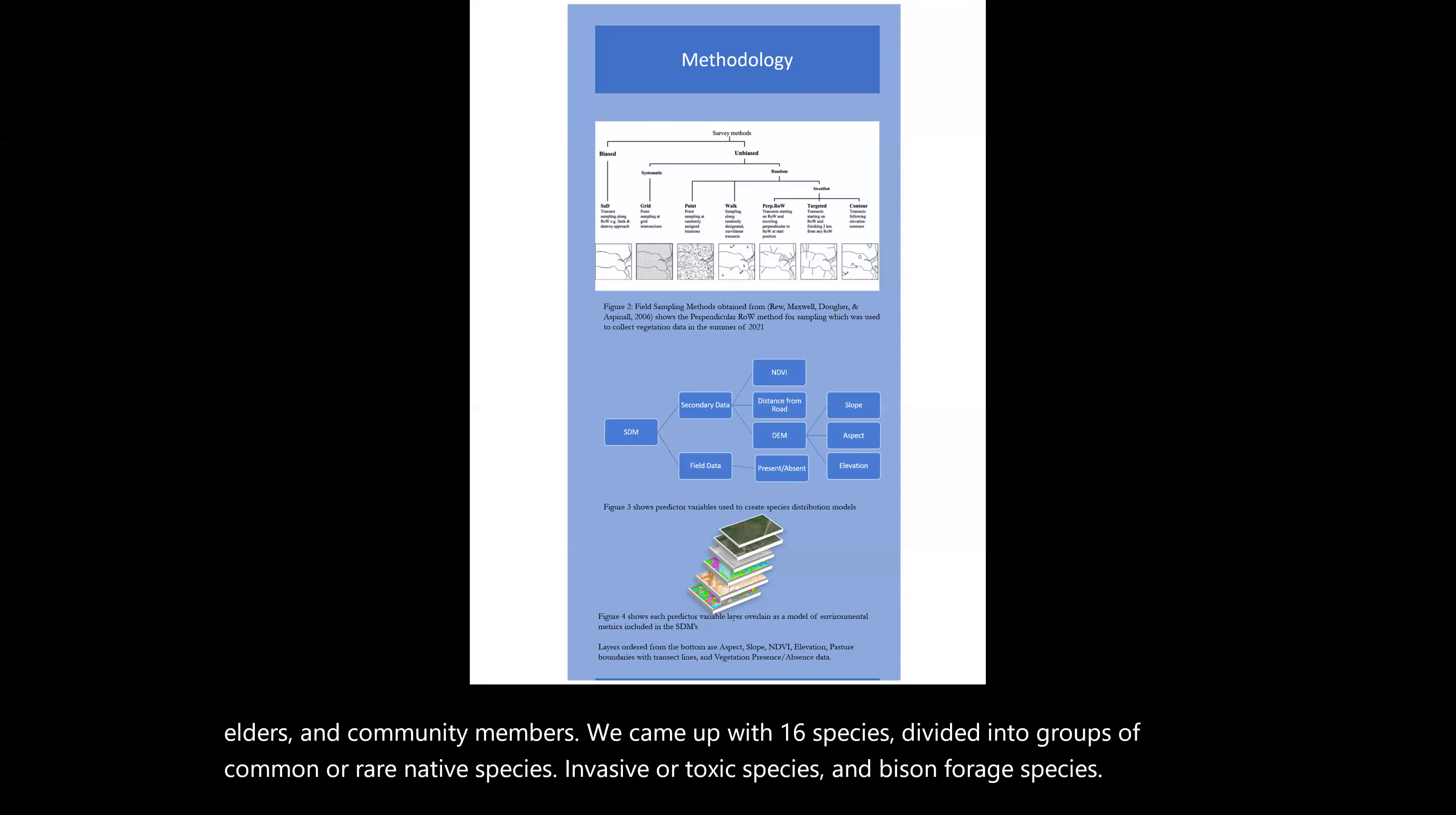With remotely sensed data, most of our environmental predictors can just be downloaded from open source online data repositories. I obtained those digital elevation model derived sources, such as slope, elevation, and aspect, as well as derived NDVI from Google Earth Engine or USGS online databases. I then used CRAN-R Studio software to plug the data into a generalized linear model and created an SDM for each of our species of interest.